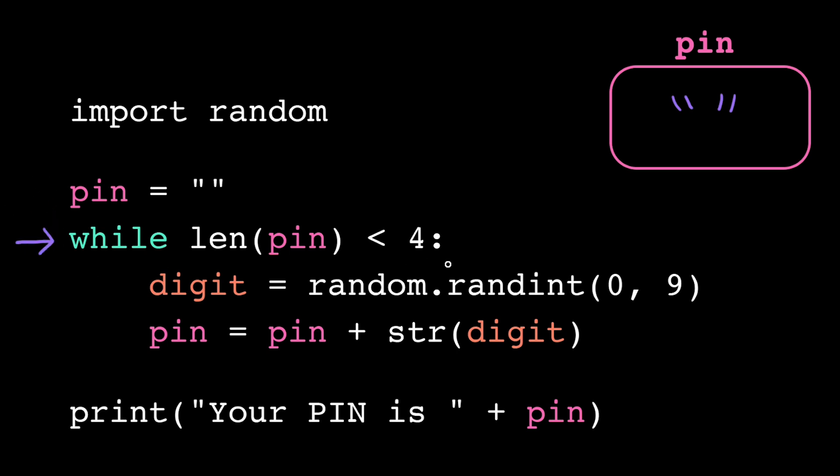Now we've reached the while loop, so the computer evaluates the loop condition. The variable pin currently contains the value, the empty string, so the length of pin is 0. 0 is less than 4, so the loop condition evaluates to true. Because it's true, the computer goes on to execute the loop body. The loop body is any lines of code that are indented inside the loop. So the next line to execute is this digit assignment statement.